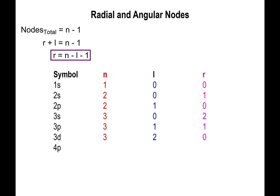For the 4p orbital, n = 4 and l = 1, so 4 - 1 - 1 = 2 radial nodes and one angular node — three total nodes for energy level 4, confirming total nodes = n - 1. For the 4d orbital, n = 4 and l = 2: 4 - 2 - 1 = 1 radial node. For the 5d orbital, n = 5 and l = 2: 5 - 2 - 1 = 2 radial nodes and two angular nodes, giving four total nodes at the fifth energy level.